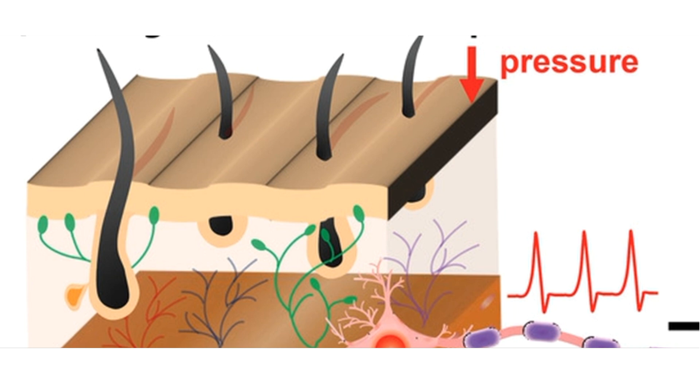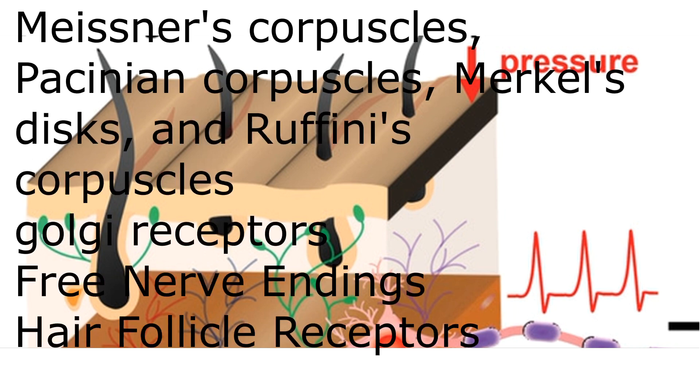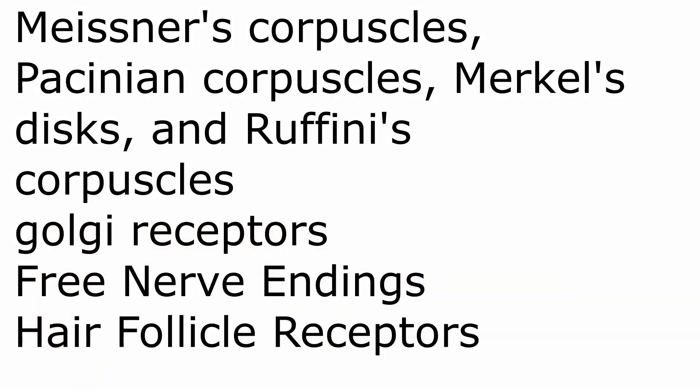There are many types of mechanoreceptors: Meissner's corpuscles, Pacinian corpuscles, Merkel's discs, Ruffini's corpuscles, Golgi receptors, free nerve endings, and hair follicle receptors.